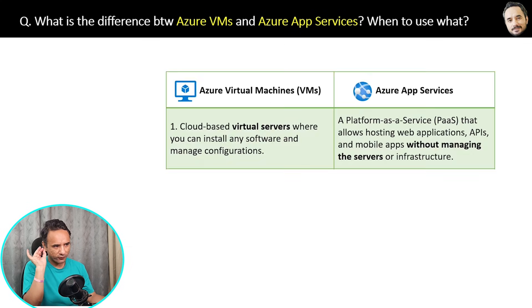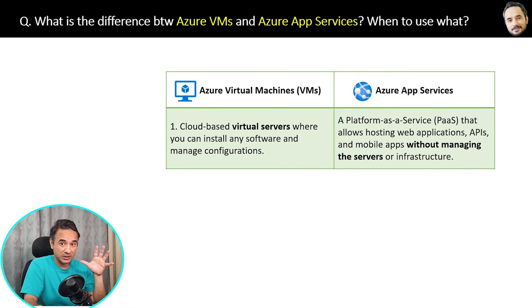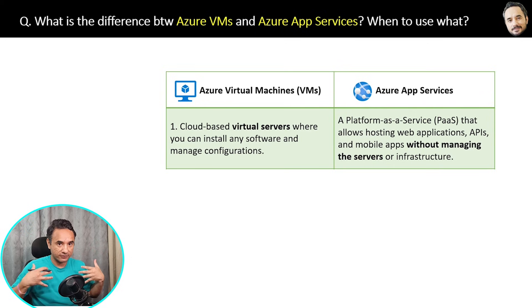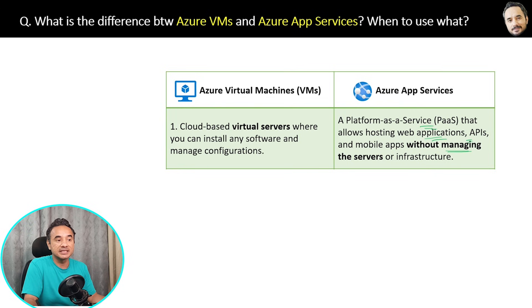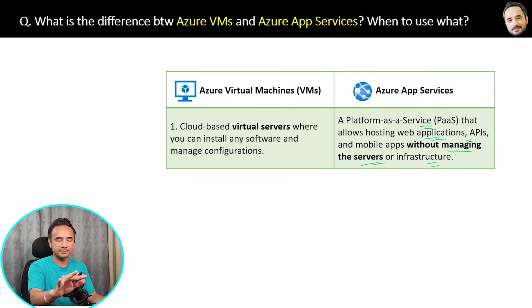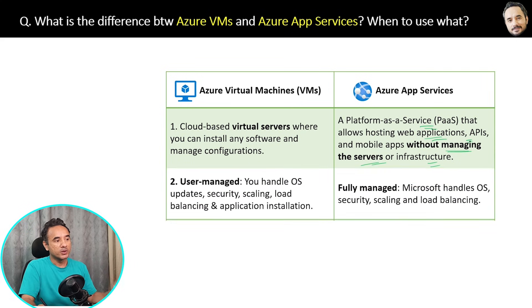The first main difference: VMs are cloud-based virtual servers where you can install any software or application and manage the configuration yourself. Whereas App Services are Platform as a Service that allow directly hosting web applications, APIs, and mobile apps without managing the servers or infrastructure. That is the basic difference.